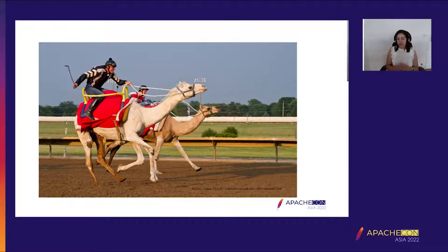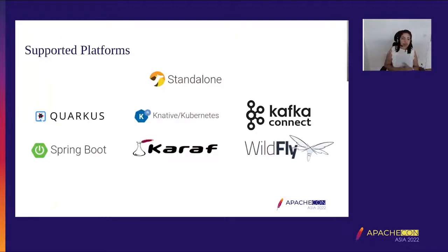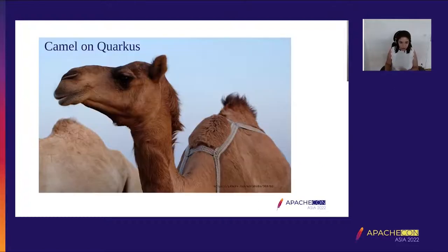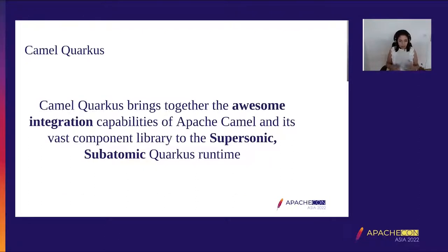Camel runs on many runtimes. Today I'm going to speak about the project I work on: Camel Quarkus on the Quarkus platform. I'll also demo a little bit on Kubernetes and Knative. There's also Spring Boot, Kafka Connect, and many other platforms. Camel Quarkus is a sub-project of Apache Camel that brings all the awesome integration capabilities and its vast component library to the supersonic, subatomic Quarkus runtime.